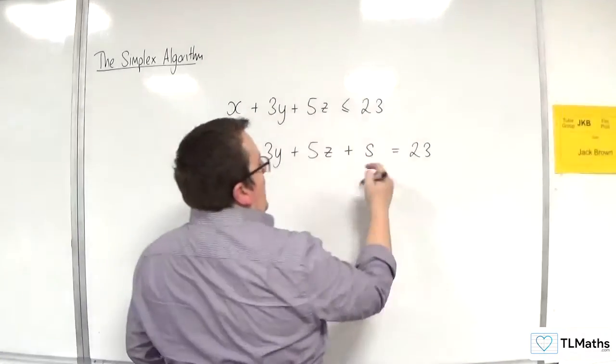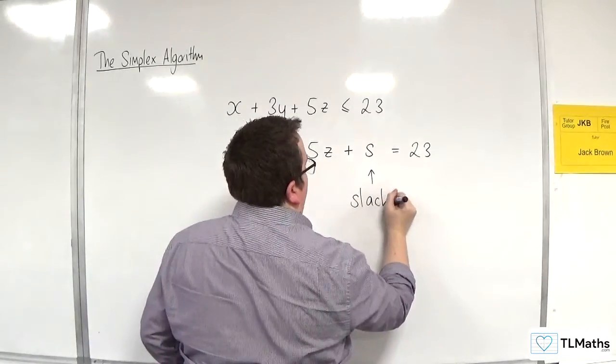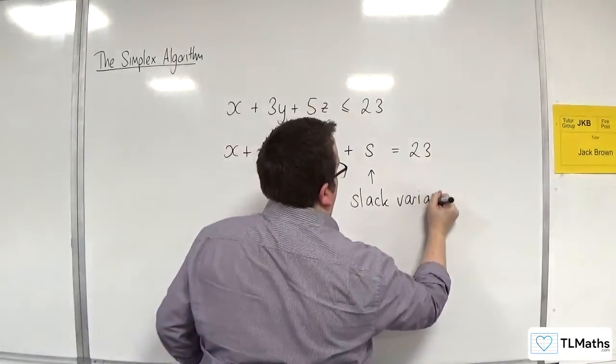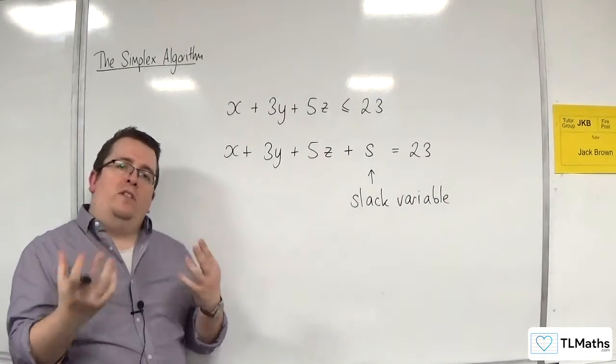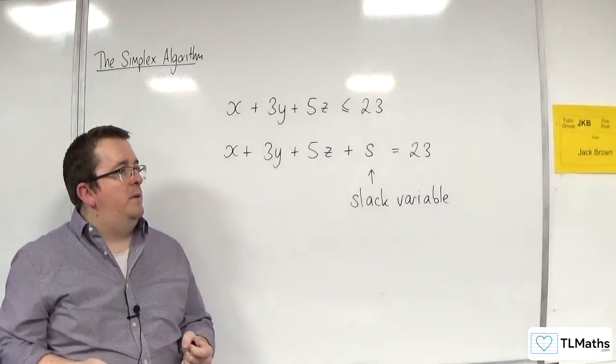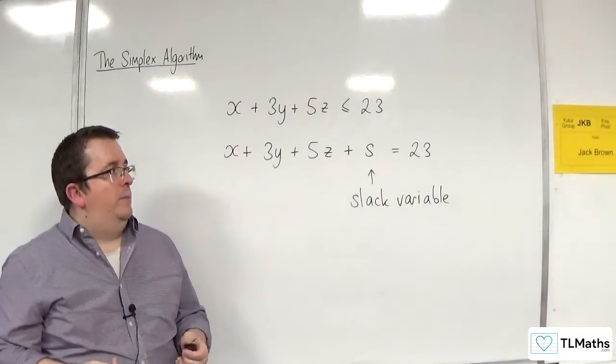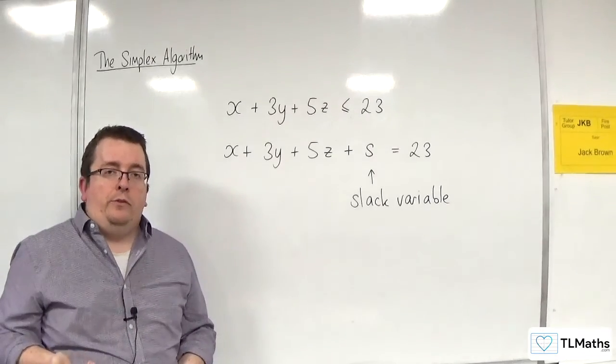Now this s that I'm adding on here is referred to as a slack variable. And when we have more than one slack variable, I'll be calling them s1, s2, s3. Or you might see in some notations, sometimes it's r, s, t, or maybe different letters are used.